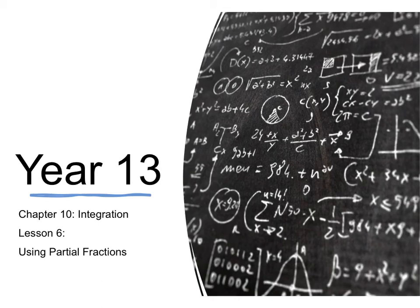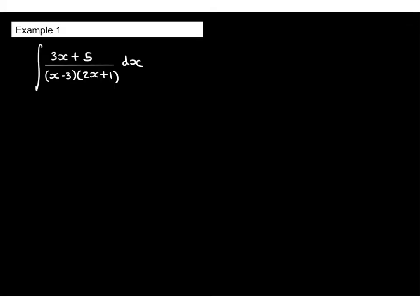Year 13, chapter 10, integration, lesson 6, using partial fractions. We're going to have a look at this integral: the integral of 3x plus 5 over x minus 3, times 2x plus 1. I'm going to take this algebraic fraction and express it as a decomposition of partial fractions.